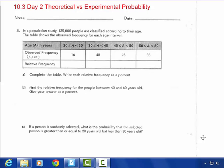In a population study, 125,000 people are classified according to their age. The table shows the observed frequency for each age interval. The observed frequency in the thousands, so this is really 16,000, 48,000, 26,000, and 35,000.